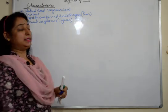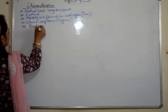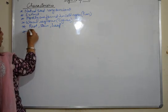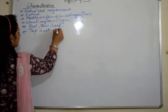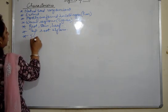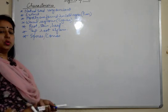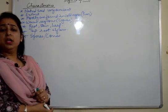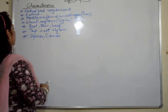Gymnosperms have a proper root, stem and leaf system and they follow a tap root system. They have an extensive tap root system, and they produce cones and spores. These are the basic general characteristics of gymnosperms which we have already done in our previous classes as well.